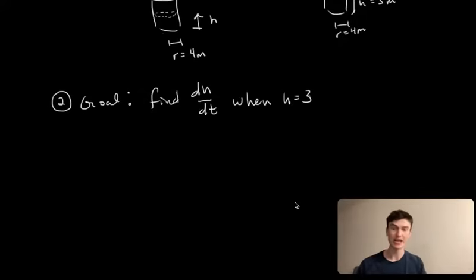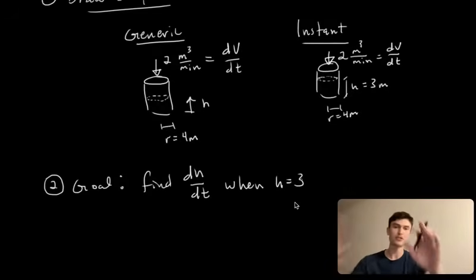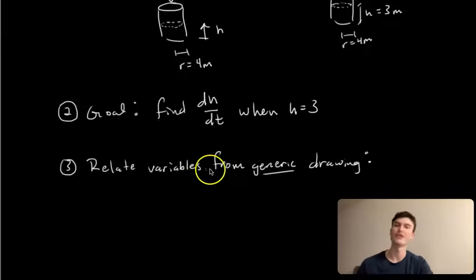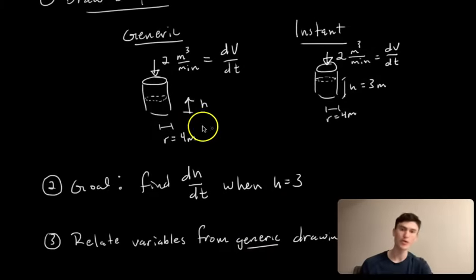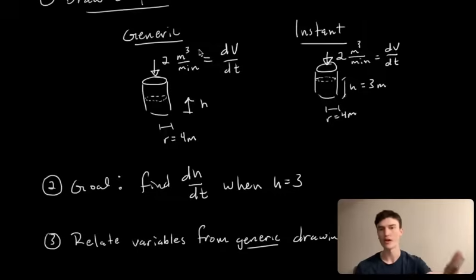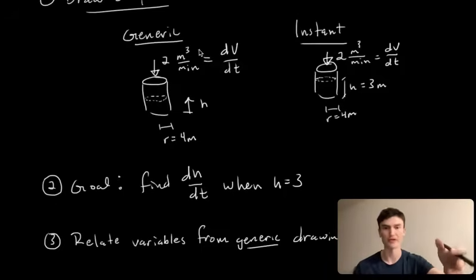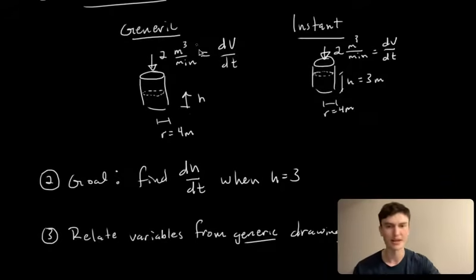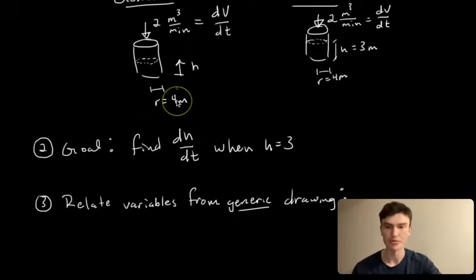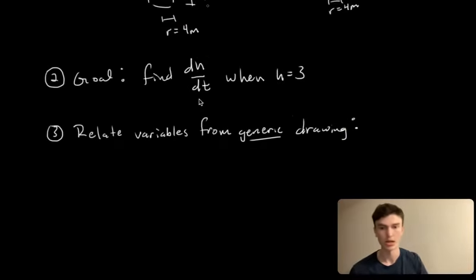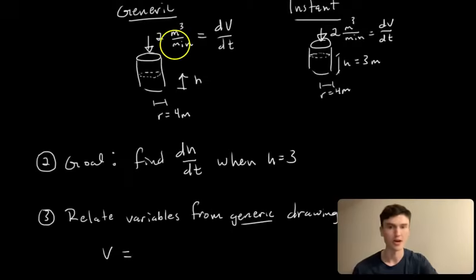Step 3: relate variables from your generic drawing. We've got height h, volume V, and radius r. This is where creativity comes in on harder problems. Here it's fairly obvious — we can write volume in terms of h and r using the formula for a cylinder: V = πr²h. That's how we'll relate them, using the generic picture.